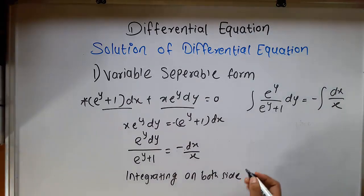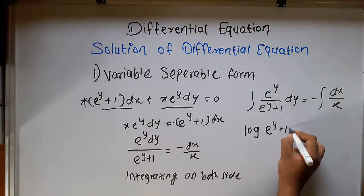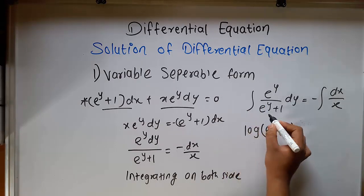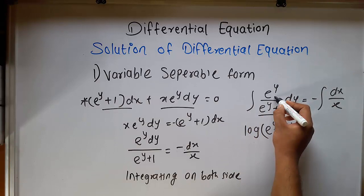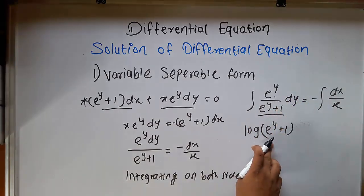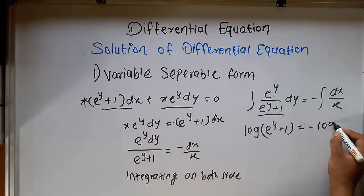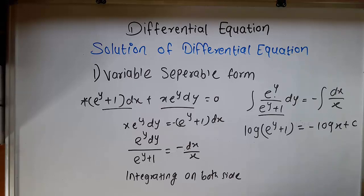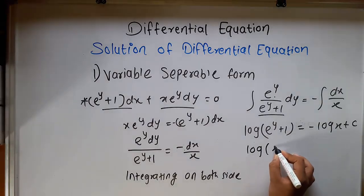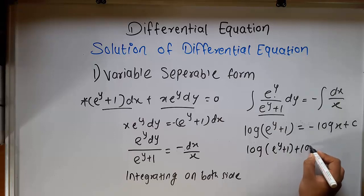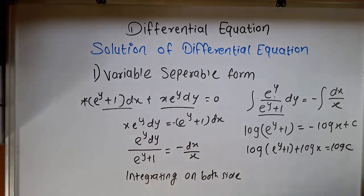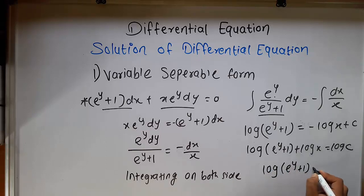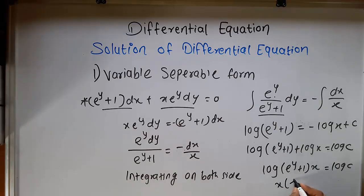Integrating both sides: the left side integrates to log of e raised to y plus 1, because the derivative of e raised to y plus 1 is e raised to y. The right side gives minus log of x plus c. Taking c as log c, we get log of e raised to y plus 1 plus log x equal to log c. Using the property log a plus log b equals log ab, this becomes log of x times e raised to y plus 1 equal to log c. Cancelling log from both sides, the solution is x times e raised to y plus 1 equal to c.